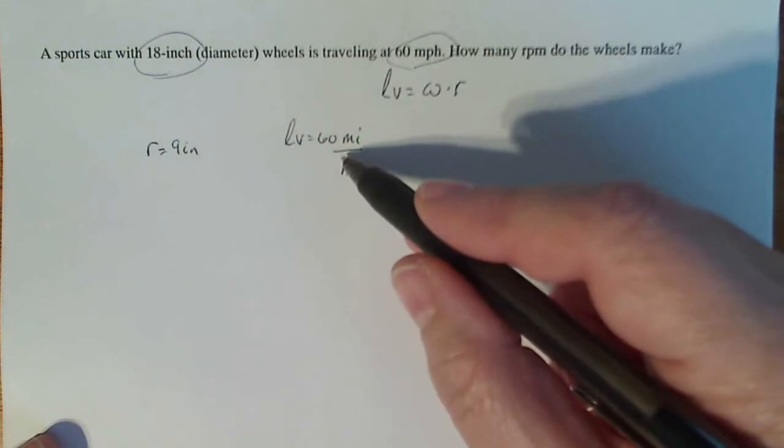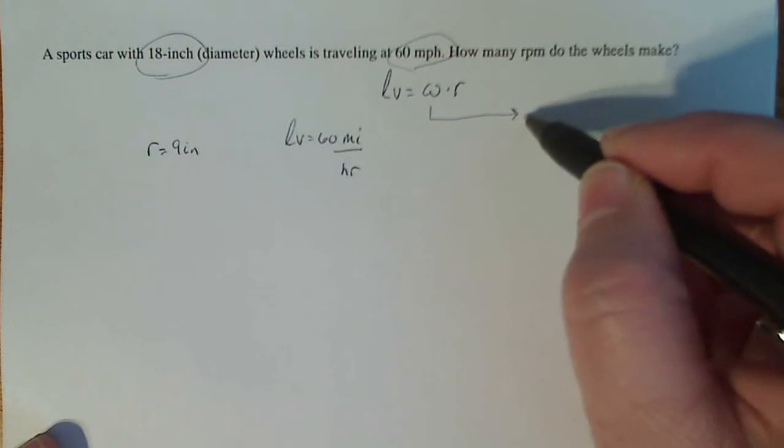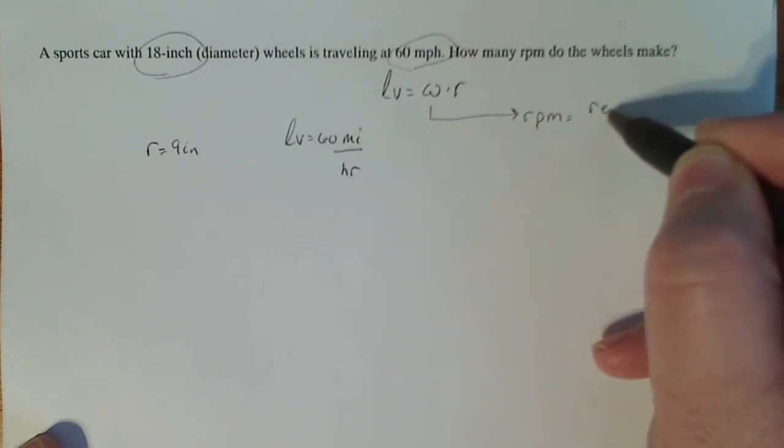So based on this, we can probably find Omega. And if we find Omega, then we can find our RPMs. RPM is just revolutions per minute.